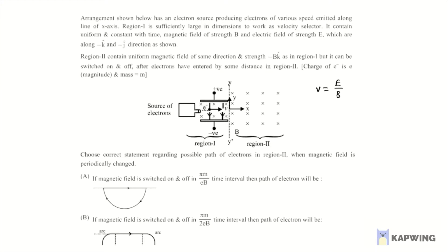And next thing, question number 9, what is asked in question number 9? Choose the correct statement regarding possible path of the electron in region 2. Path of the electron we have to calculate when the magnetic field is periodically changed.